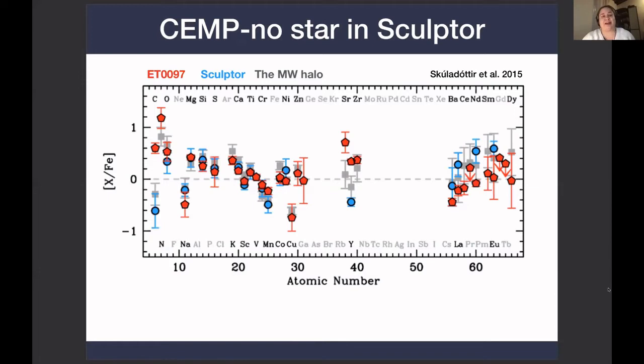However, when we come to the light neutron-capture elements, something weird is happening. This star shows very enhanced abundances of these elements, while the heavier elements are quite low compared to other Sculptor stars.